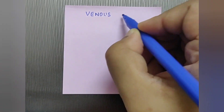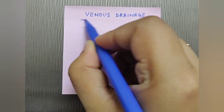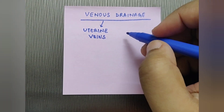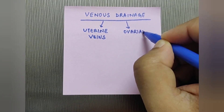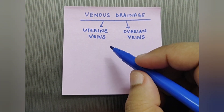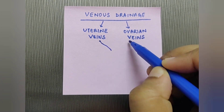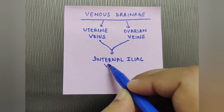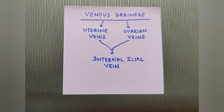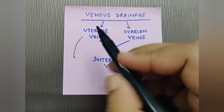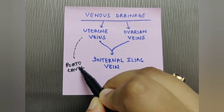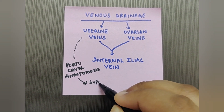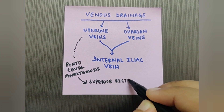Now we'll learn about the venous drainage of the uterus. It is drained by the uterine veins and the ovarian veins, which finally drain into the internal iliac vein. These uterine veins also form a portocaval anastomosis with the superior rectal vein.